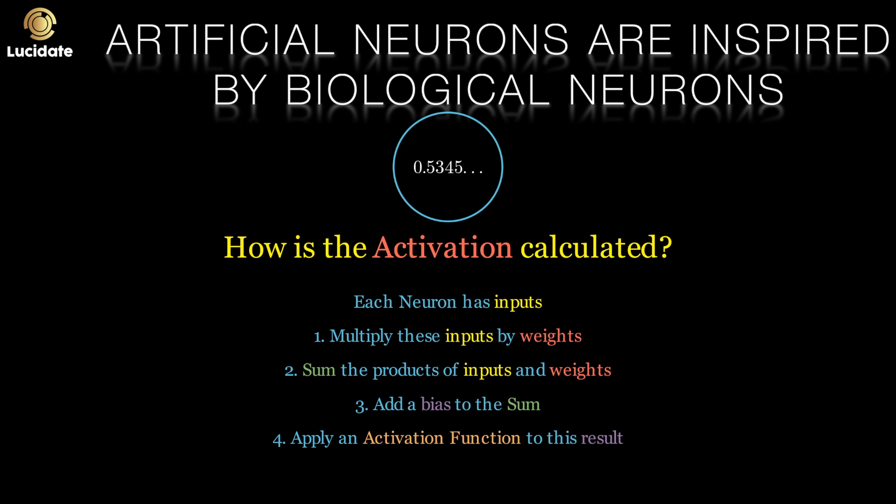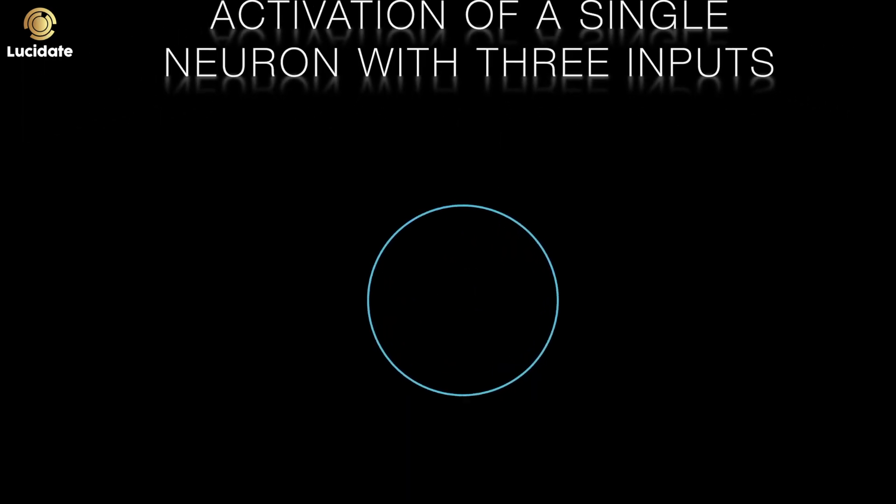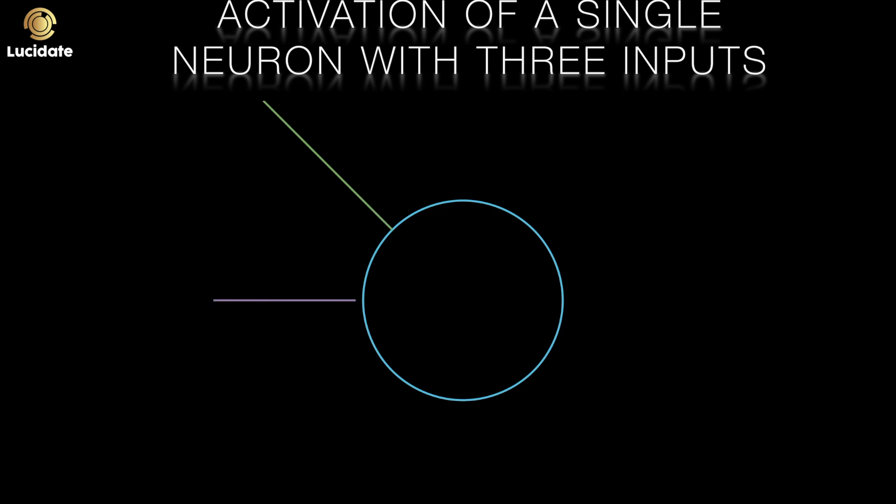We'll talk much more about activation functions and different types of activation function in the next blog in this series. To illustrate this process, let's look at a single neuron with just three inputs. These inputs here are a1, a2 and a3.